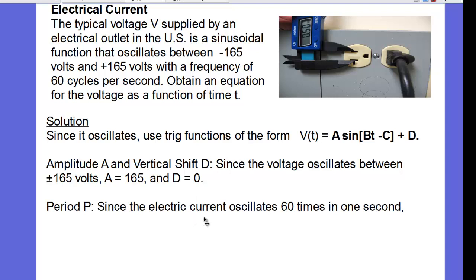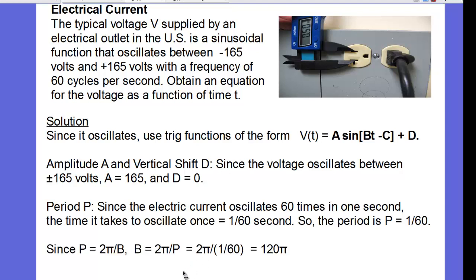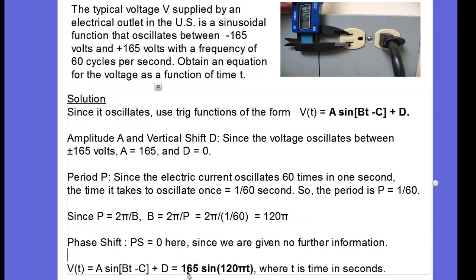The period, well, we're told that it oscillates 60 cycles per second, so therefore it makes one period in 1/60th of a second. Since the period 1/60th is equal to 2π divided by B, we're going to solve for B, and we're going to get 2π divided by 1/60th is 120π. And there is no phase shift here, so the final equation here, 165 sine of 120πT, where T is the time in seconds. That's the voltage that's generated by the alternating current in your house.